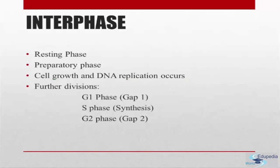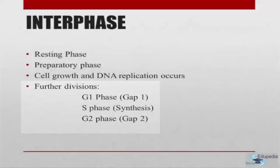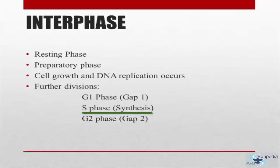Interphase is further divided into three phases. The first one is the G1 phase, also known as the GAP1 phase. The second one is the S phase, also known as the synthesis phase. And the third one is the G2 phase, also known as the GAP2 phase.